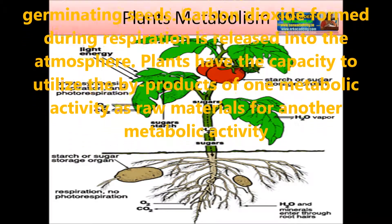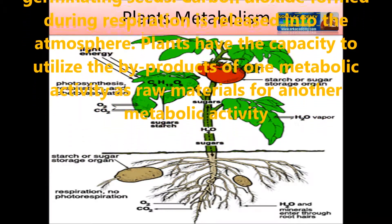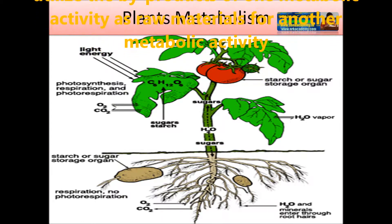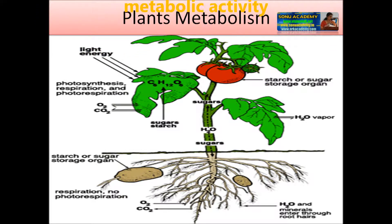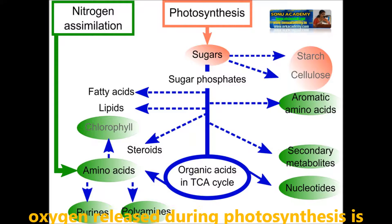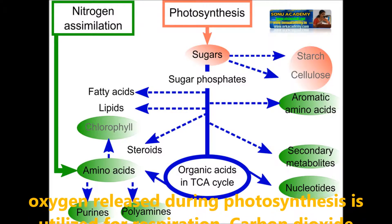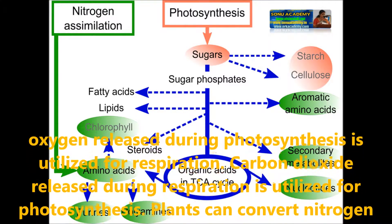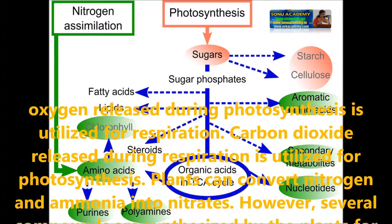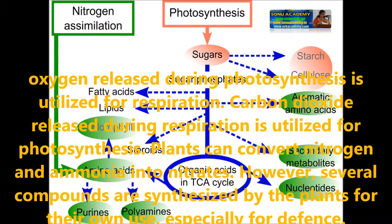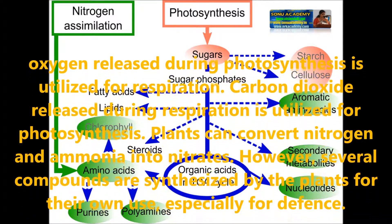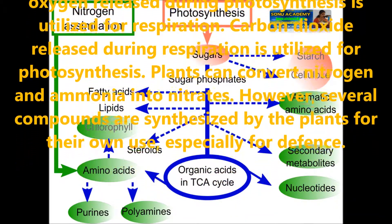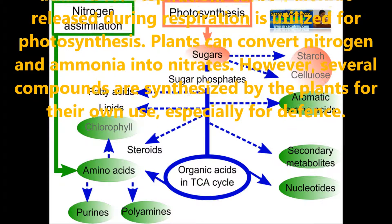Plants have the capacity to utilize the byproducts of one metabolic activity as a raw material for another metabolic activity. For example, oxygen released during photosynthesis is utilized for respiration, and carbon dioxide released during respiration is utilized for photosynthesis. Plants can also convert nitrogen and ammonia into nitrates.